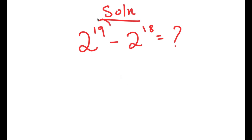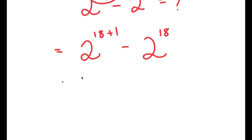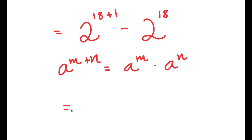To start off, I'm going to rewrite 19 as 18 plus 1. So I get 2 to the power of 18 plus 1, minus 2 to the power of 18. And if I have something in the form a to the power of m plus n, this is equal to a to the power of m times a to the power of n. So 2 to the power of 18 plus 1 is equal to 2 to the power of 18 times 2 to the power of 1.